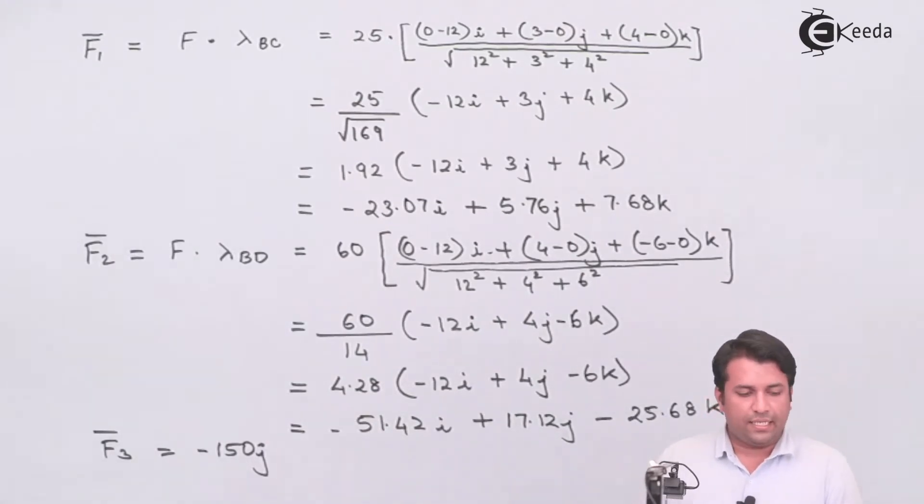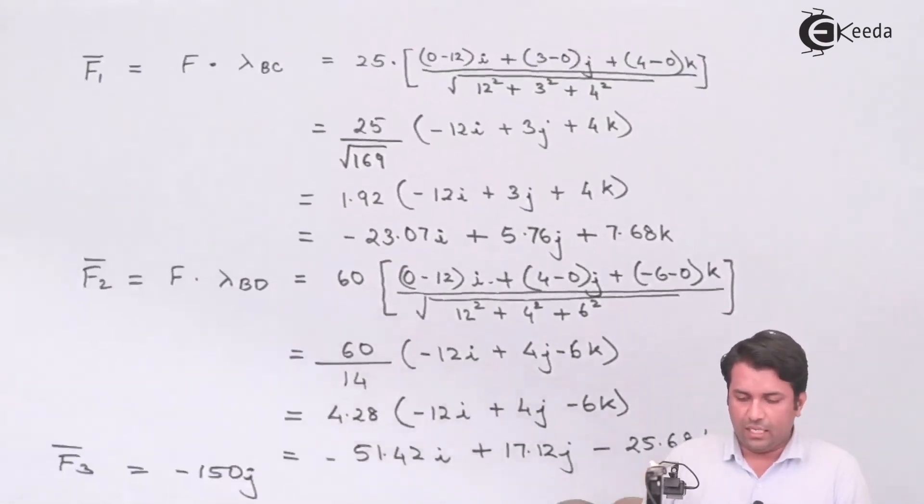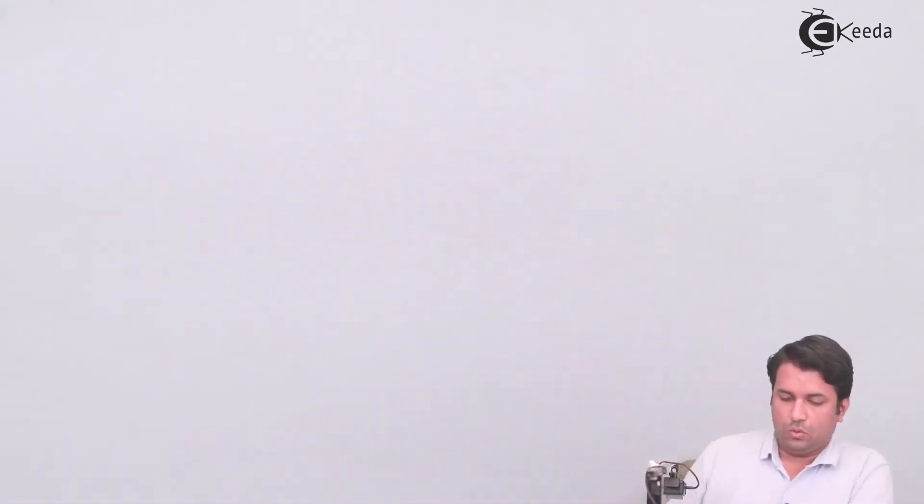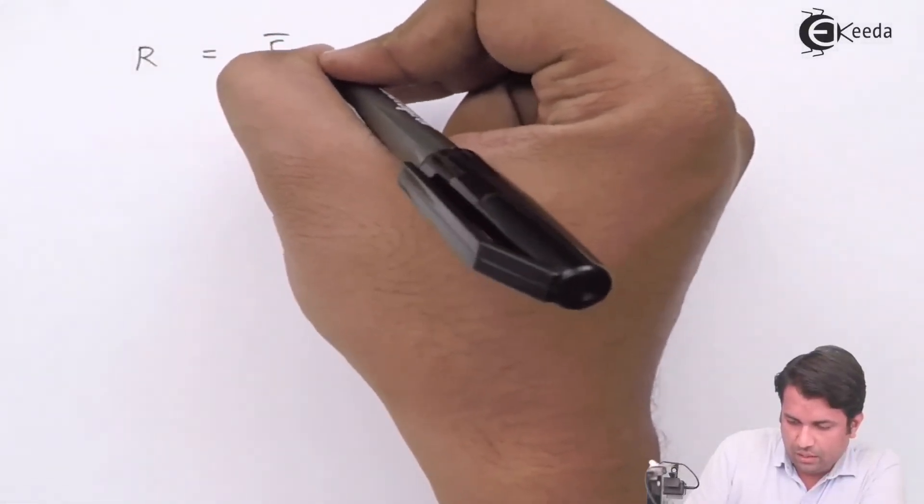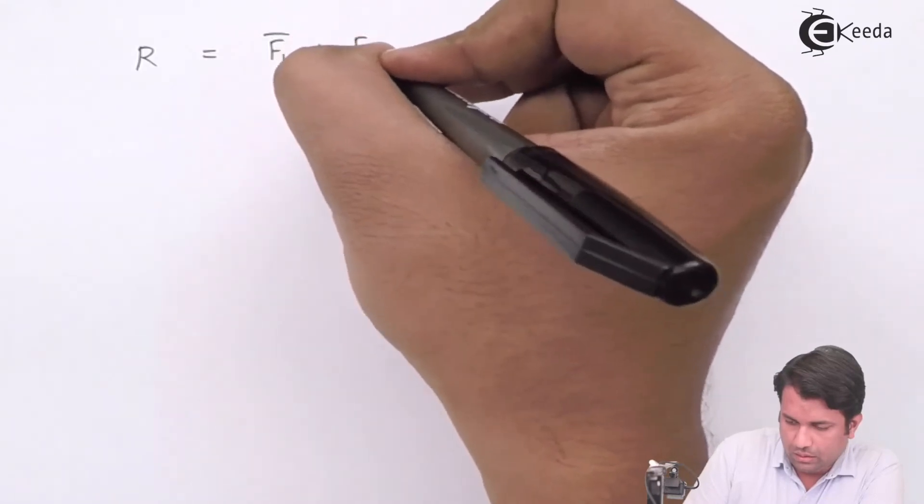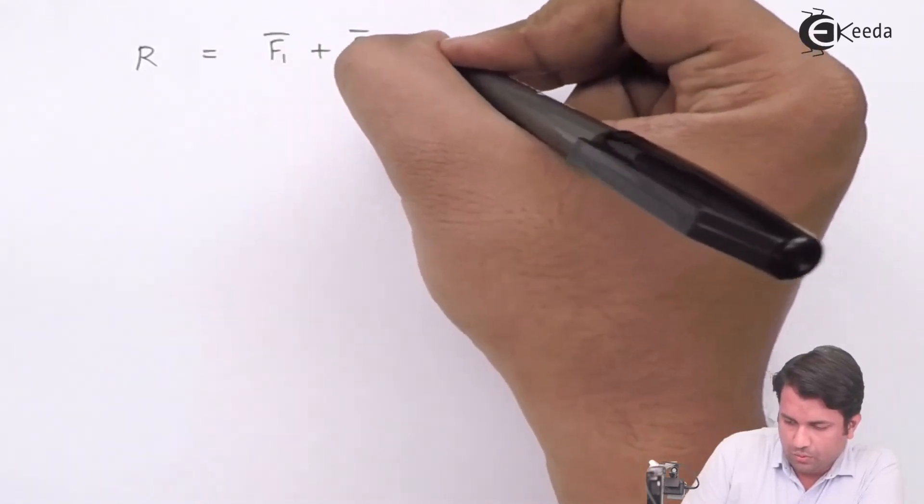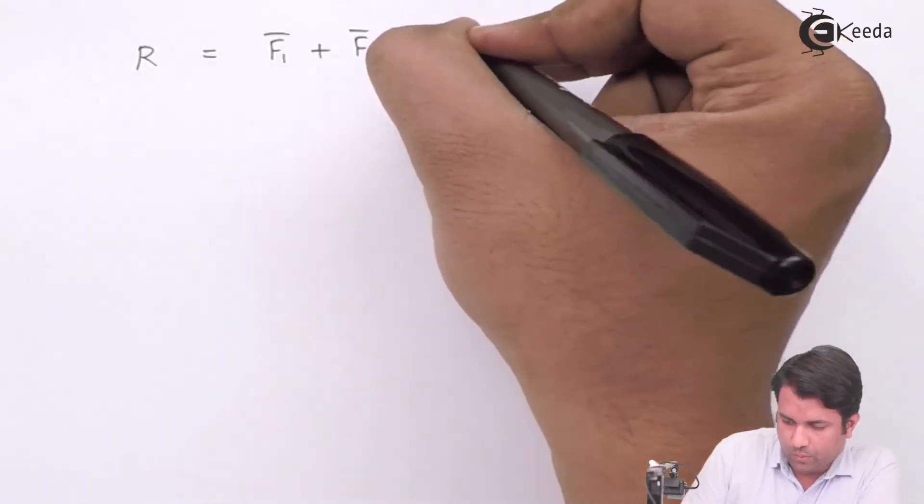Now all I need to do is take the resultant of these three force vectors. So R equals F1 plus F2 plus F3. I have got the resultant vector.